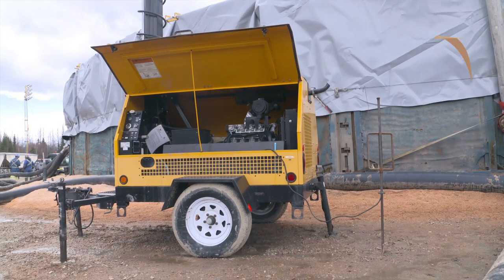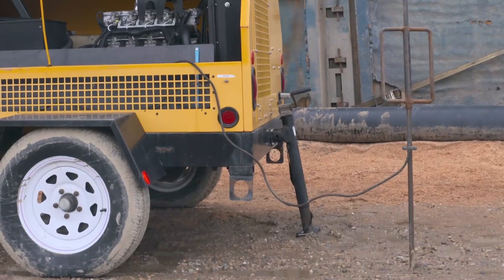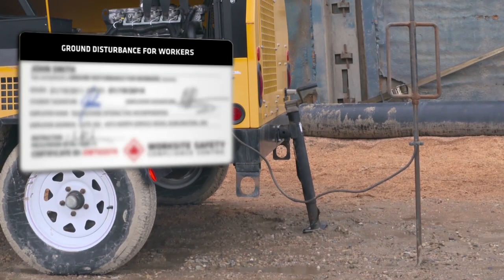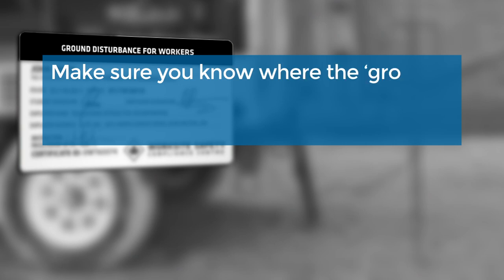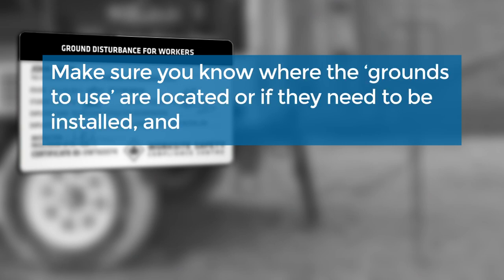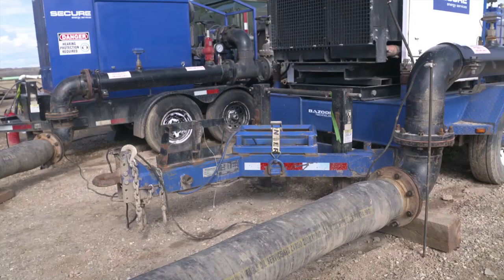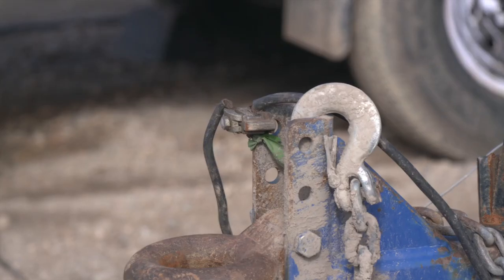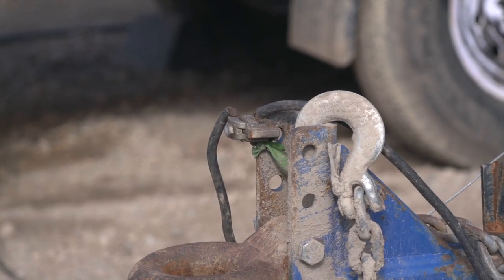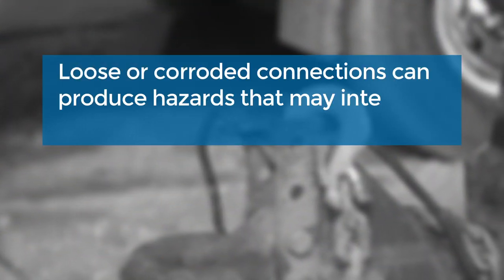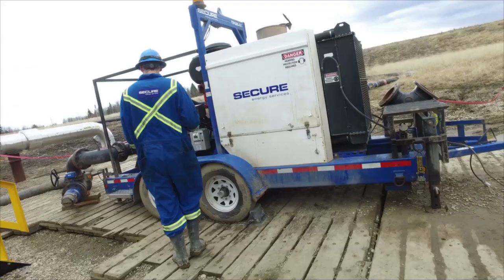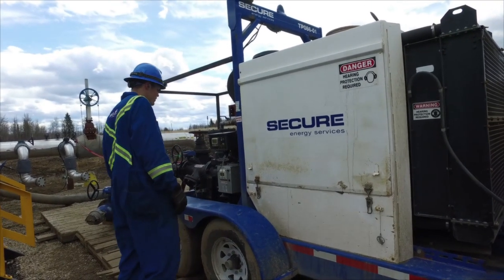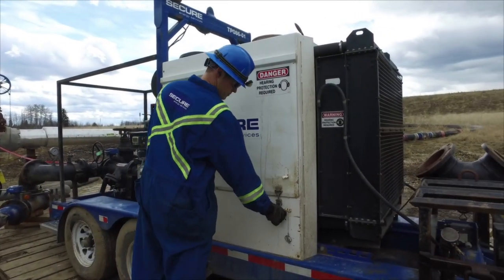To ensure safe work, metal ground rods or plates are used. To install a ground rod or plate, a ground disturbance ticket is required. There are many requirements depending on the location and specific site hazards. Make sure you know where the grounds to use are located, or if they need to be installed, and who is qualified to do so. When you have the ground point identified, a grounding cable is attached, usually with a lug. Connection should be metal to metal with good solid contact. Loose or corroded connections can produce hazards that may interfere with equipment operations. Preventative maintenance should be conducted on the unit at service intervals, but sometimes you may need a verification check performed with a multimeter. Ask about your company's specific procedures.